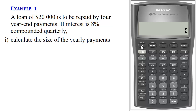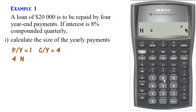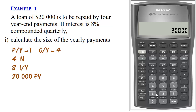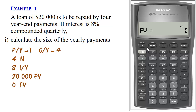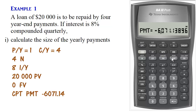There are four yearly payments, so N is going to be four. We press 4, N. Interest rate is 8%, we press 8, I/Y. Present value is $20,000, so we enter 20,000 PV. We skip payment for now and set future value to zero, then compute payment. The yearly payment should be $6,071.14.